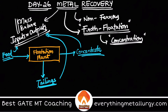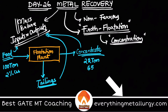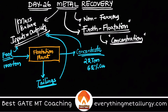Let's say we are doing froth flotation for copper — concentrating copper ore. We have 1000 tons of feed which has 2% copper, and we get 25 tons of concentrate which contains 65% copper. The output cannot be greater than the input, so we use 1000 tons of feed at 2% copper being concentrated into 25 tons of concentrate at 65% copper.